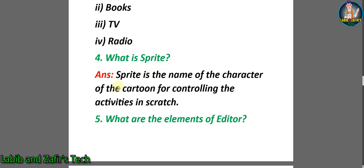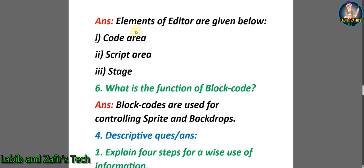Number four: What is a sprite? Answer: A sprite is the name of the character or cartoon for controlling the activities in Scratch. Number five: What are the elements of an editor? Answer: The elements of an editor are number one, code area; number two, script area; number three, stage. Number six: What is the function of block code? Answer: Block codes are used for controlling sprites and backdrops.